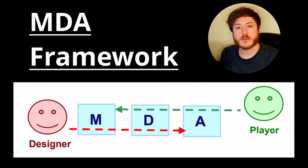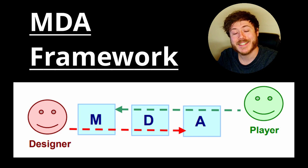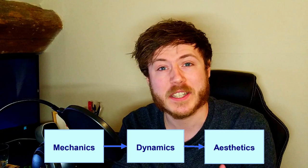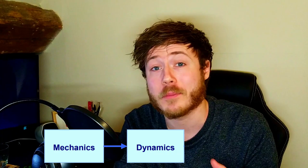Players and designers naturally end up looking along the MDA framework in opposite directions. Players see and feel the aesthetics first and usually won't think too hard about the mechanics or dynamics. But when you want to think about game design — especially when making a game yourself — you can only create the building blocks that are mechanics. You can't just implement an aesthetic directly. Aesthetics are built out of dynamics, which are built out of mechanics. This can result in losing the aesthetic you originally wanted to convey, because you're so zoomed in on mechanic after mechanic that you forget to step back and look at the bigger picture. We need to check that the mechanics and resulting dynamics are actually building towards the aesthetic we want to give the player.